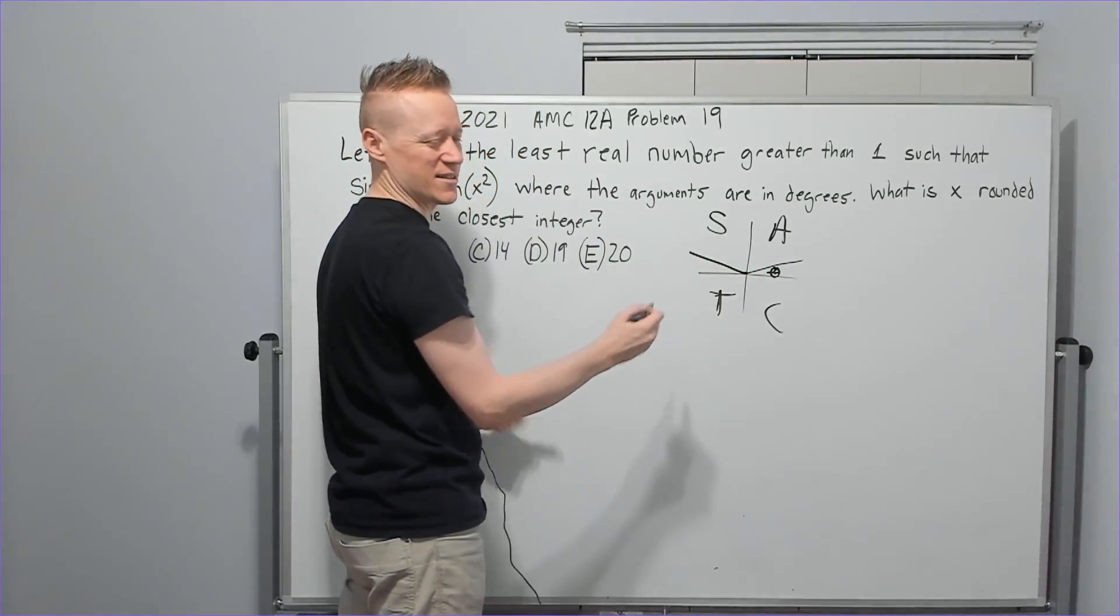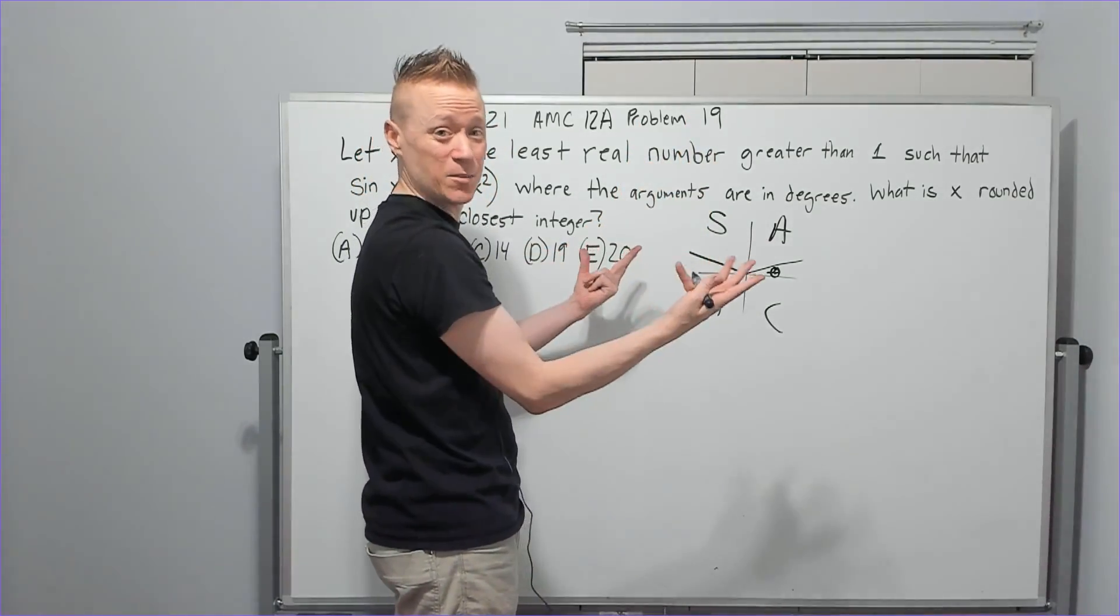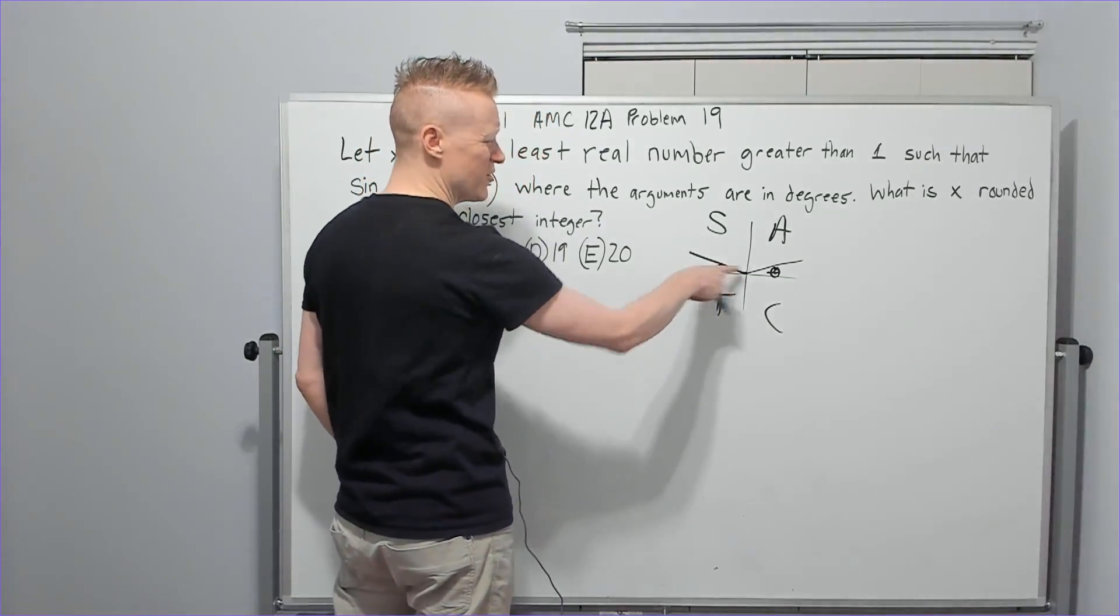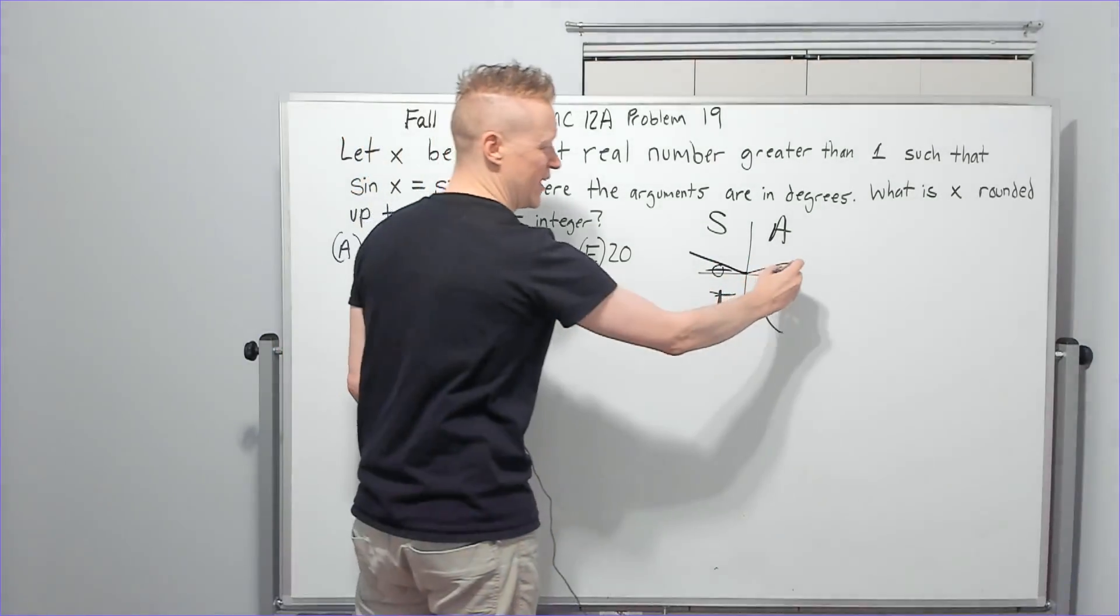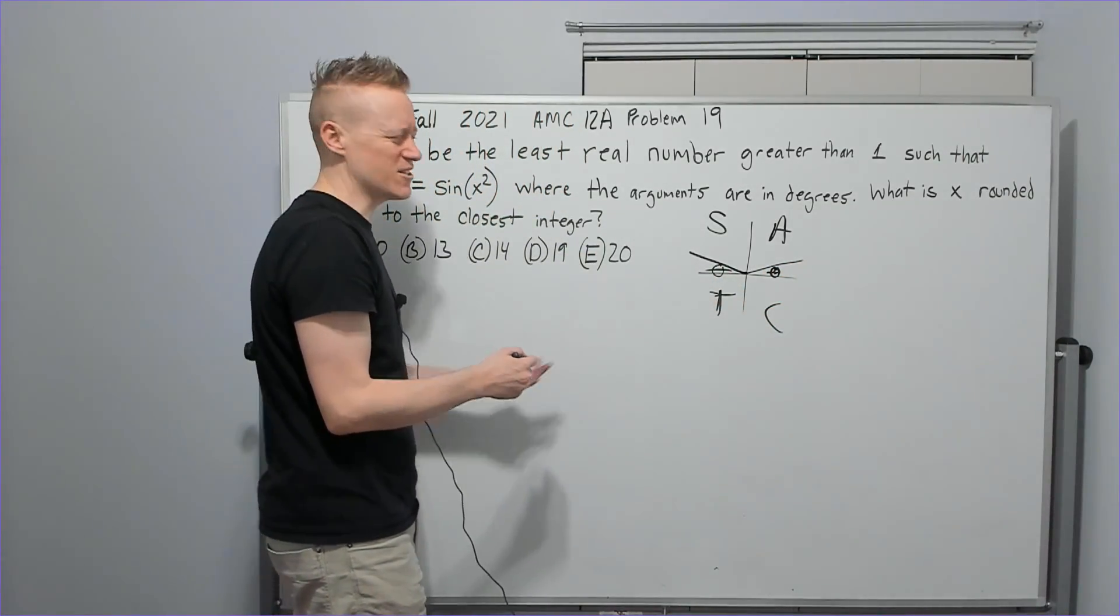There's other ways to know sine is positive. Sine is associated with y, and in the first two quadrants, y is a positive value and so on. But these are equal. So if I have like, you know, sine of 30, it's equal to sine of 150. This should be common knowledge.